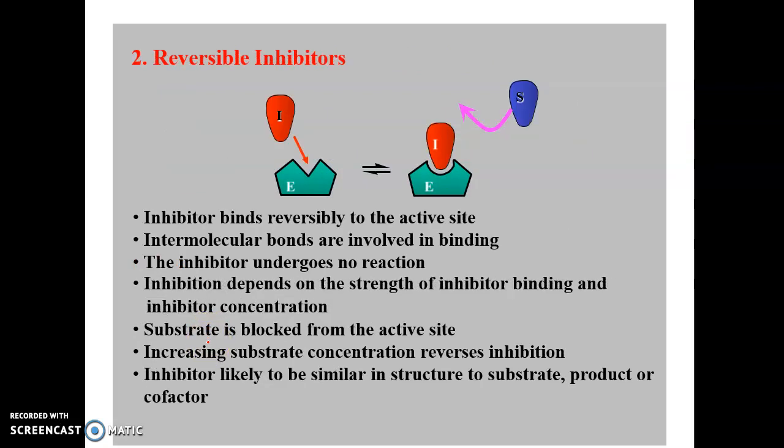When a drug molecule or chemical agent binds with the active site, different kinds of inhibition mechanisms occur. The drug molecule binds with the enzyme — the enzyme acts as the target — and the binding can be either reversible or irreversible. Based on that mechanism, we first discuss reversible inhibitors.